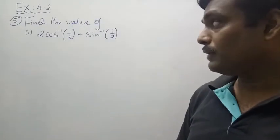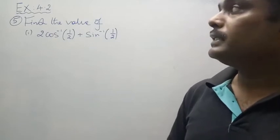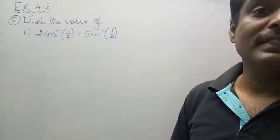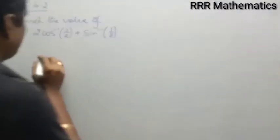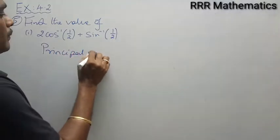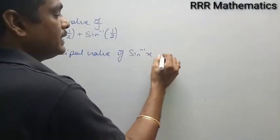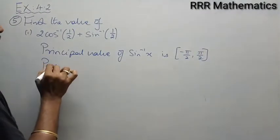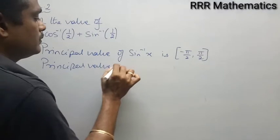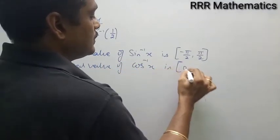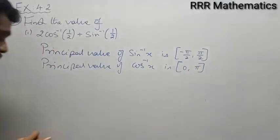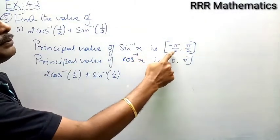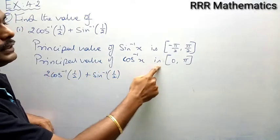Find the value of 2 times cos inverse of half plus sin inverse of half. In this case, you must know the principal value of sin inverse x and cos inverse x. The principal value of sin inverse x is between minus 90 and plus 90 degrees. And the principal value of cos inverse x is 0 to 180 degrees, i.e., 0 to pi.